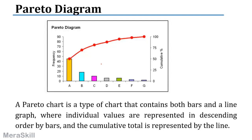A Pareto diagram contains both bars and a line graph, where the individual values are represented in descending order. The bars are arranged from highest to lowest, and the line represents the cumulative total.